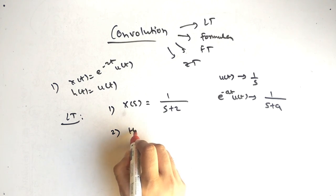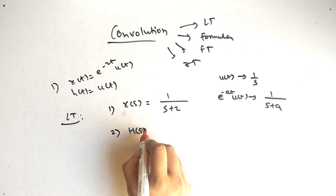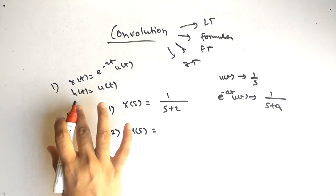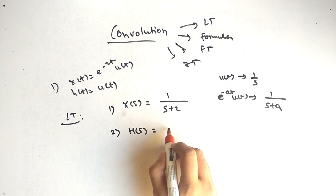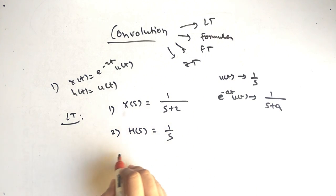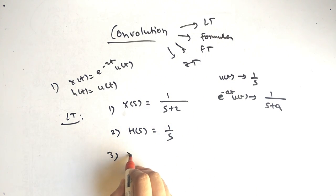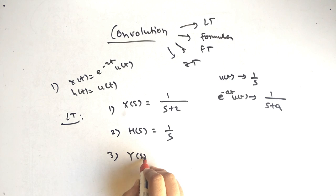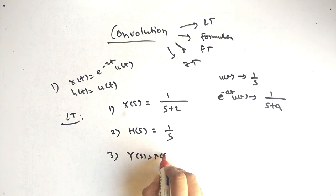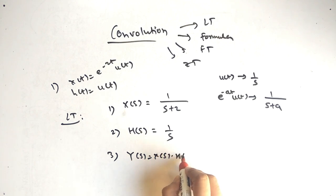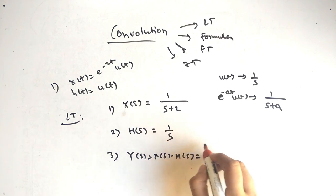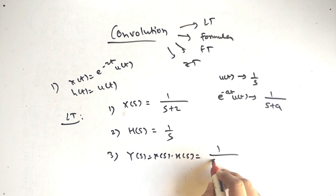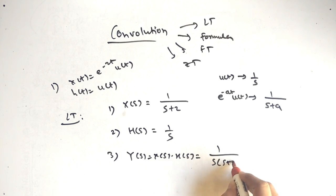The second step is to convert h of t to H of s. Since h of t is u of t, H of s equals 1 by s. The third step is to use the convolution property: Y of s equals X of s times H of s, which means multiplying both, giving 1 over s times s plus 2.